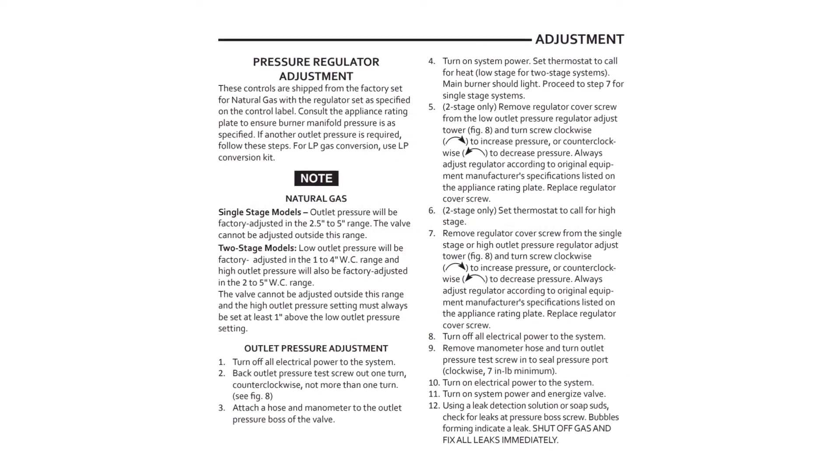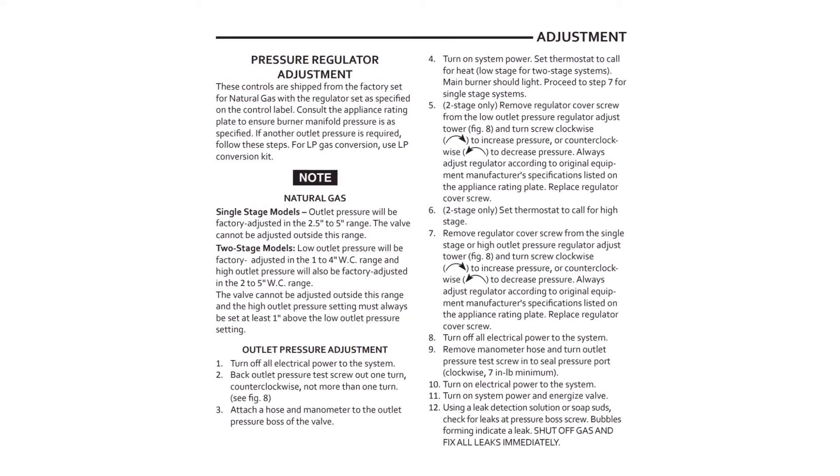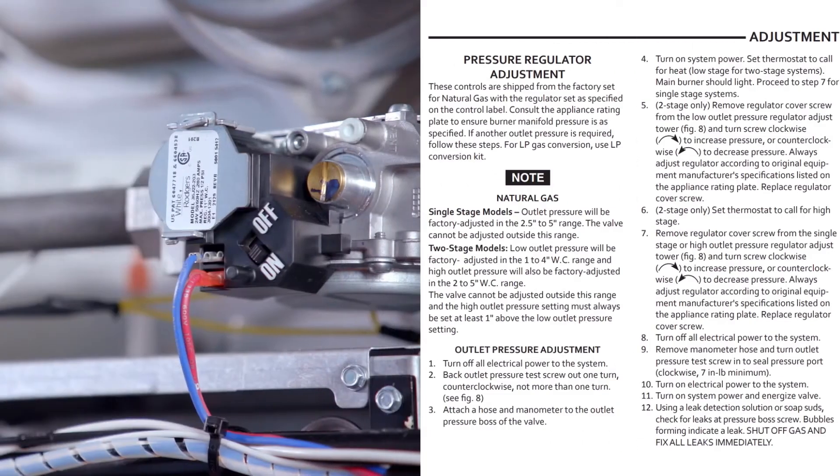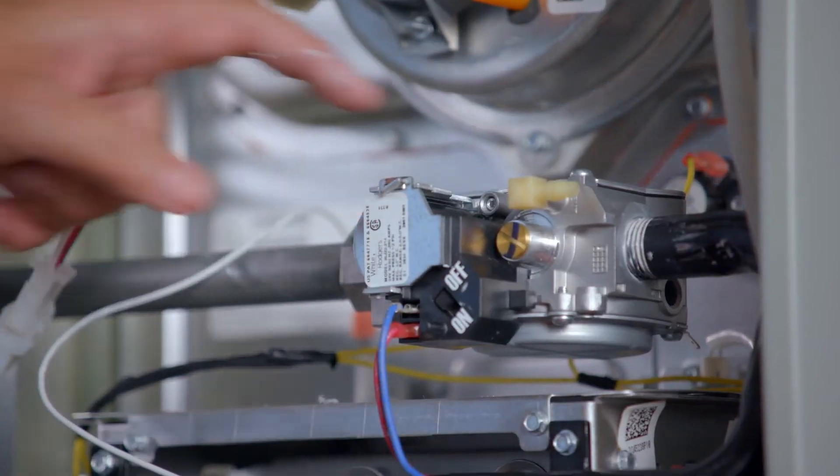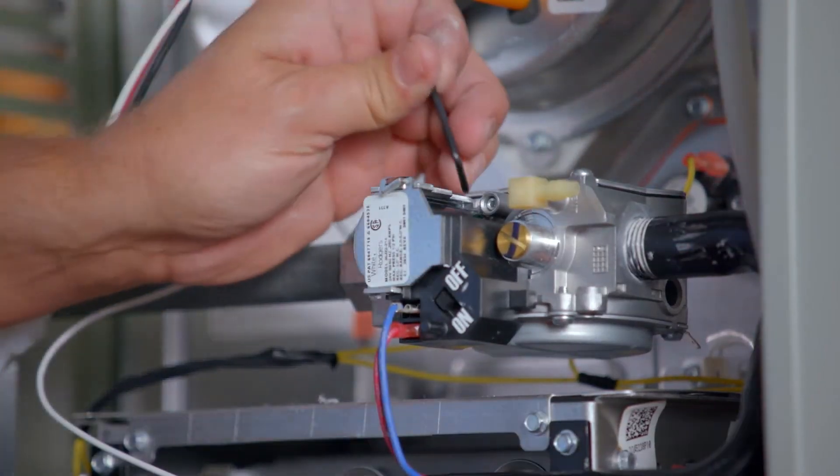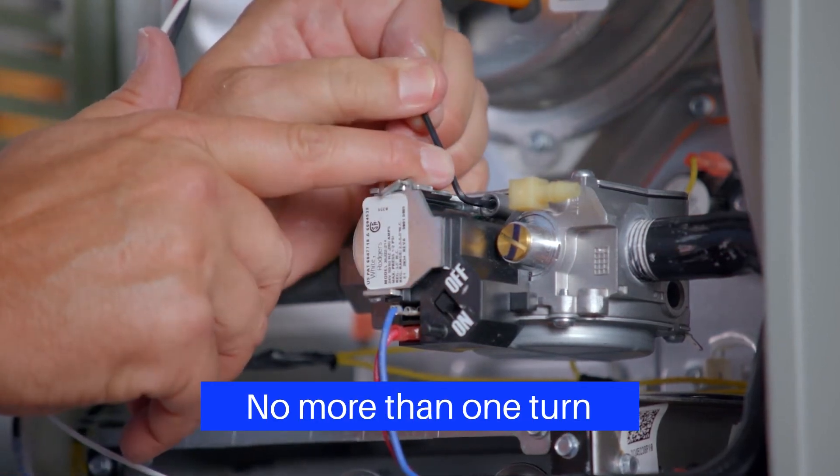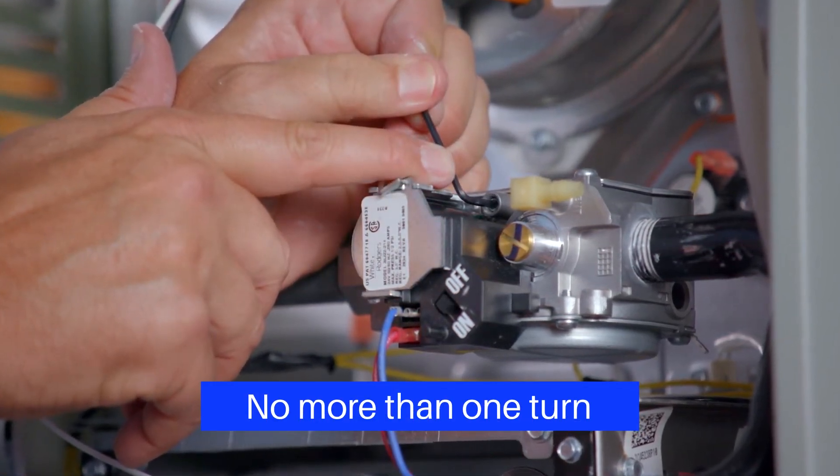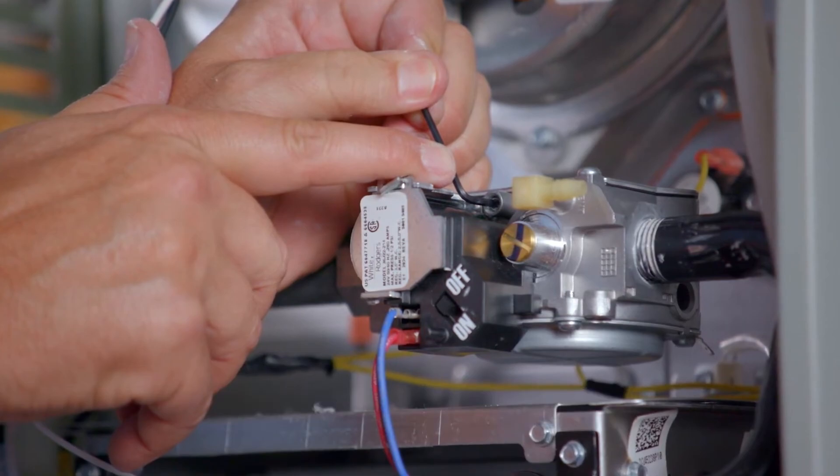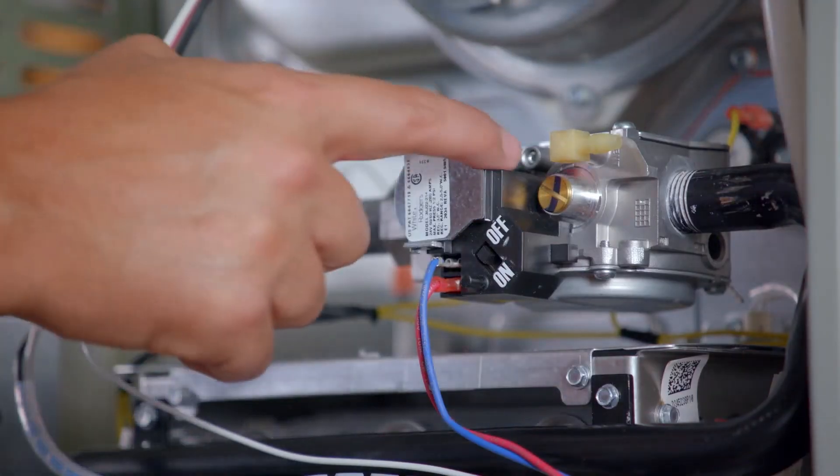The system is now ready to be tested. Following the instructions supplied with the gas valve, prepare the gas valve for gas pressure testing. With gas and electrical power still off, identify the outlet pressure post, sometimes called a tower, labeled OUT-P, and back the outlet pressure test screw out one-quarter to one-half a turn. The post accepts a 5/16th hose connection.